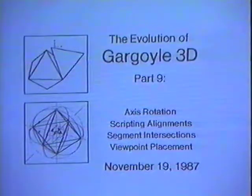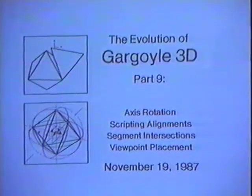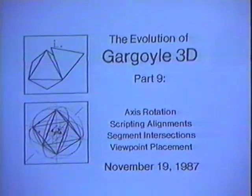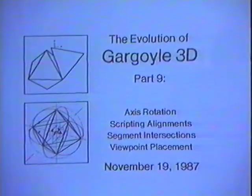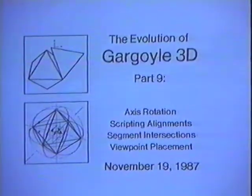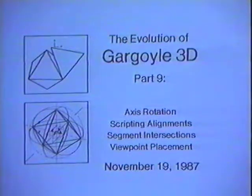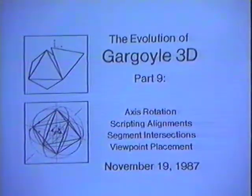This is the evolution of Gargoyle 3D Part 9. Since last time, four new interesting features were added: you can rotate objects around the y-axis of the anchor, alignment operations now appear in session scripts and can be played back, the intersections of segments are computed and gravity active, and there's a new operation for using snap-dragging to place the viewpoint.